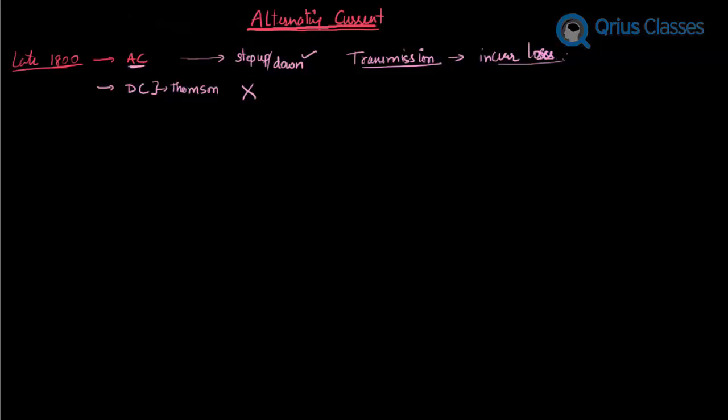It was found that since you can transfer AC with high voltages and low currents, the transmission losses, which are I squared R, were less for AC because we can get to very low current levels, and hence it was preferred over DC.